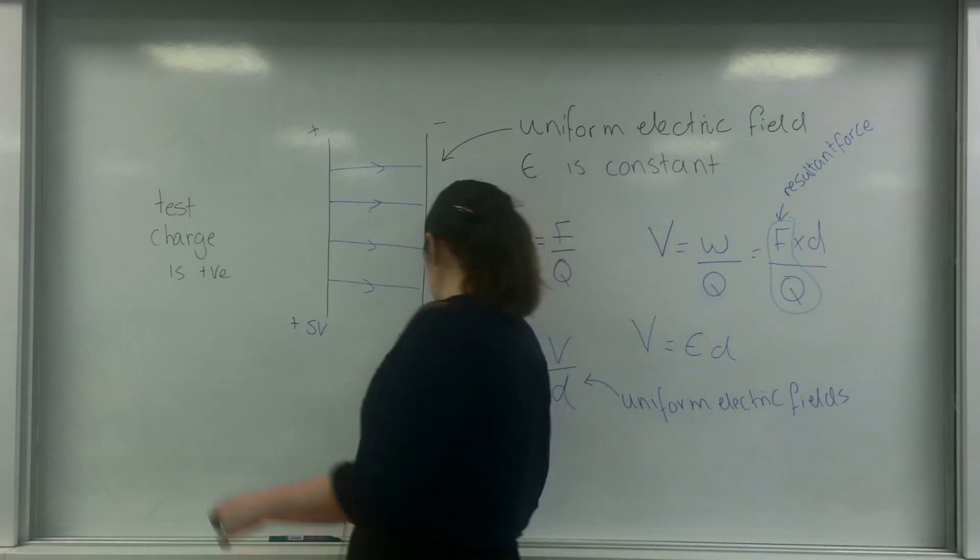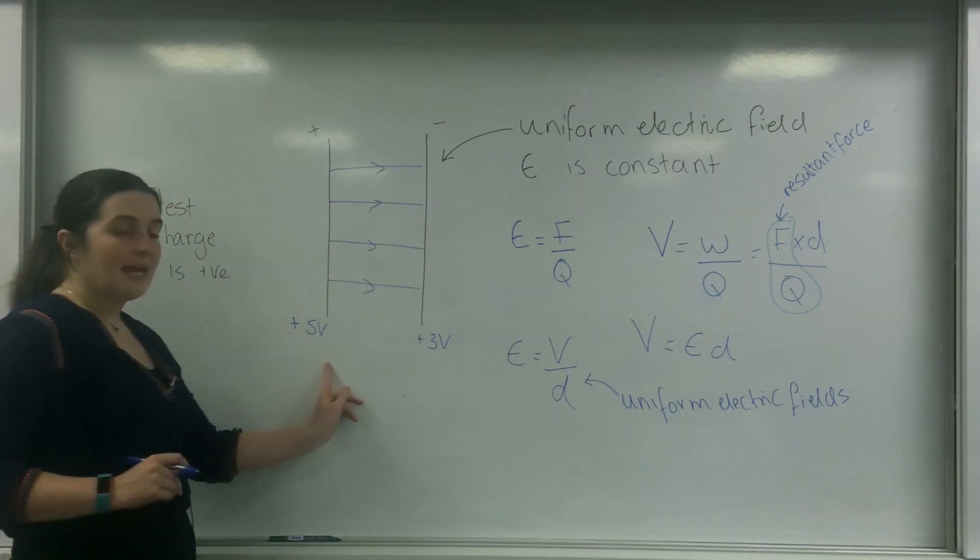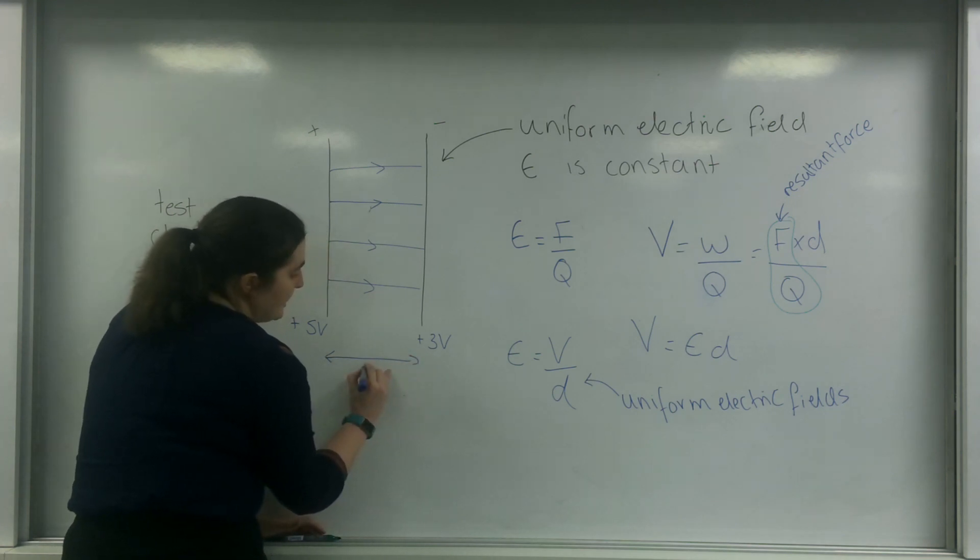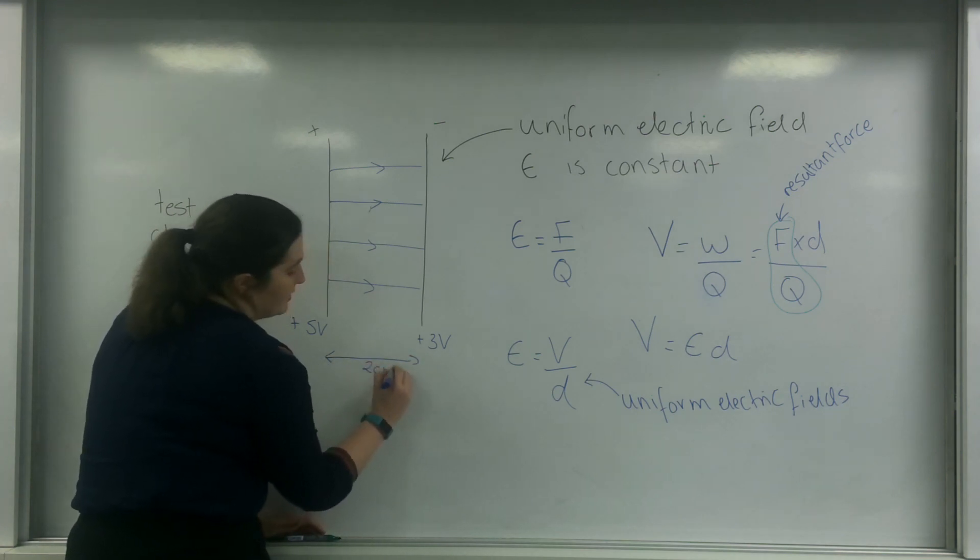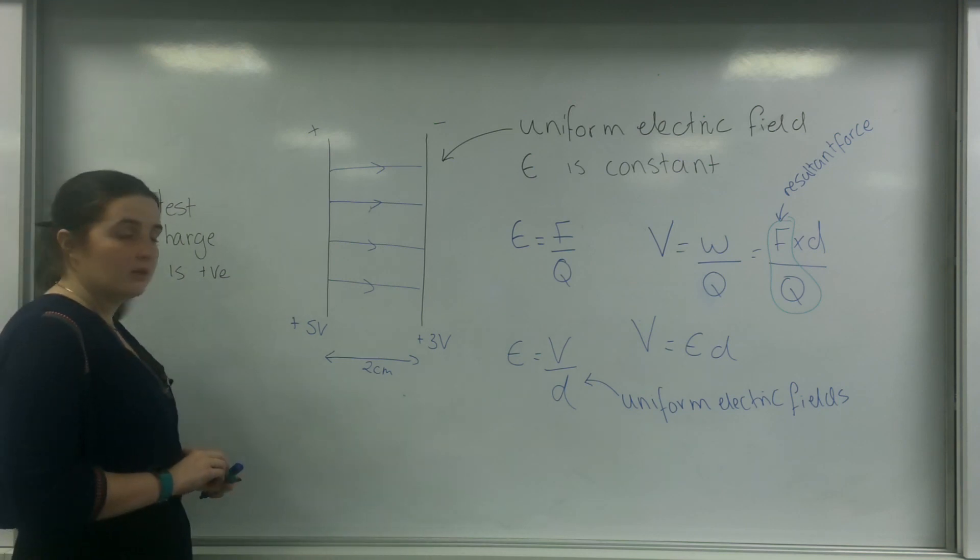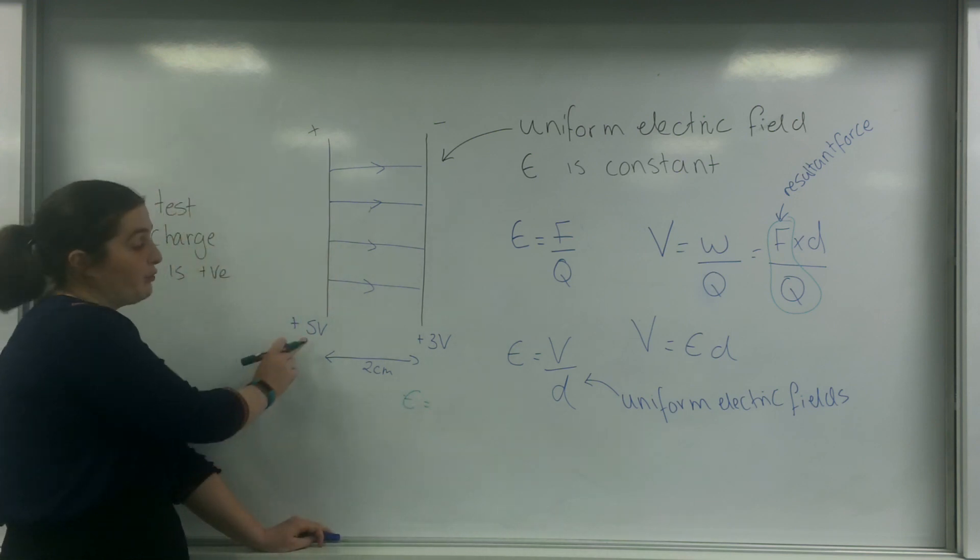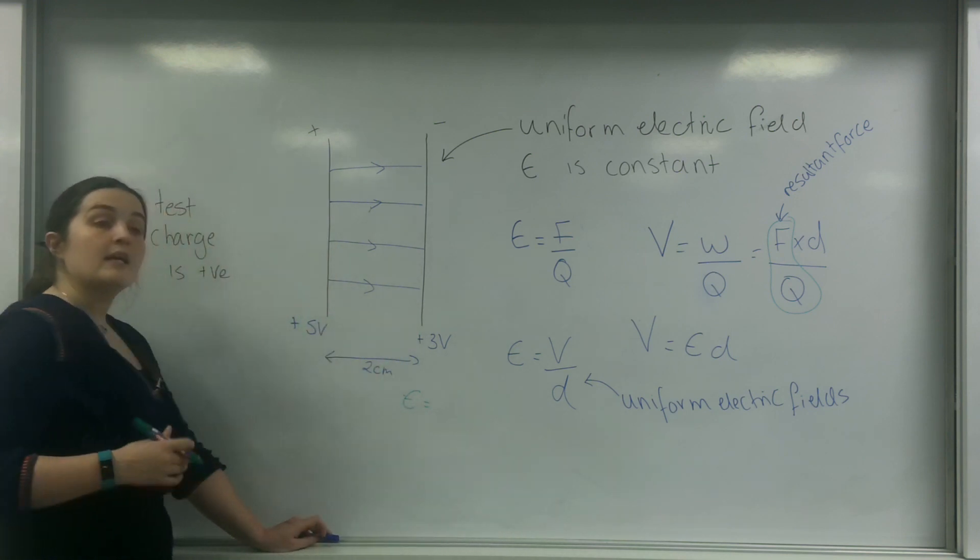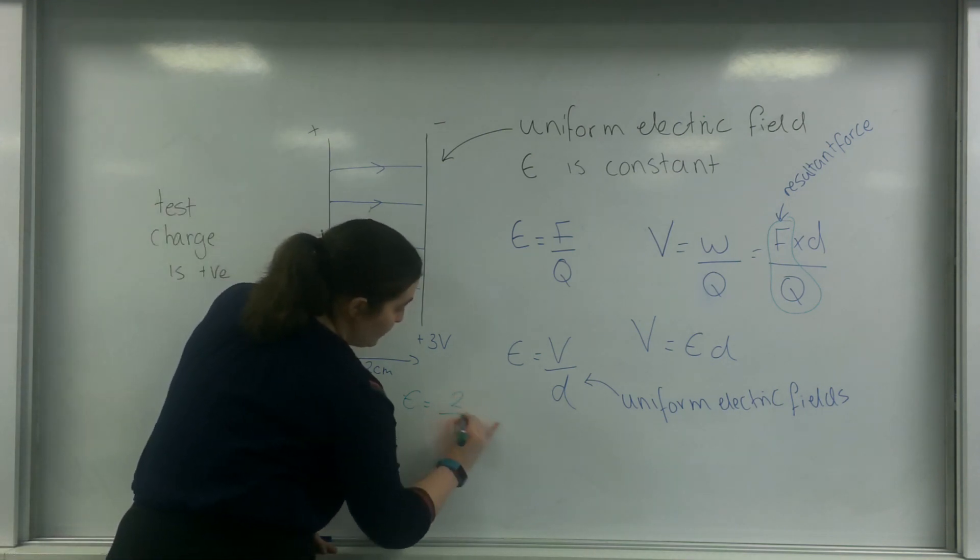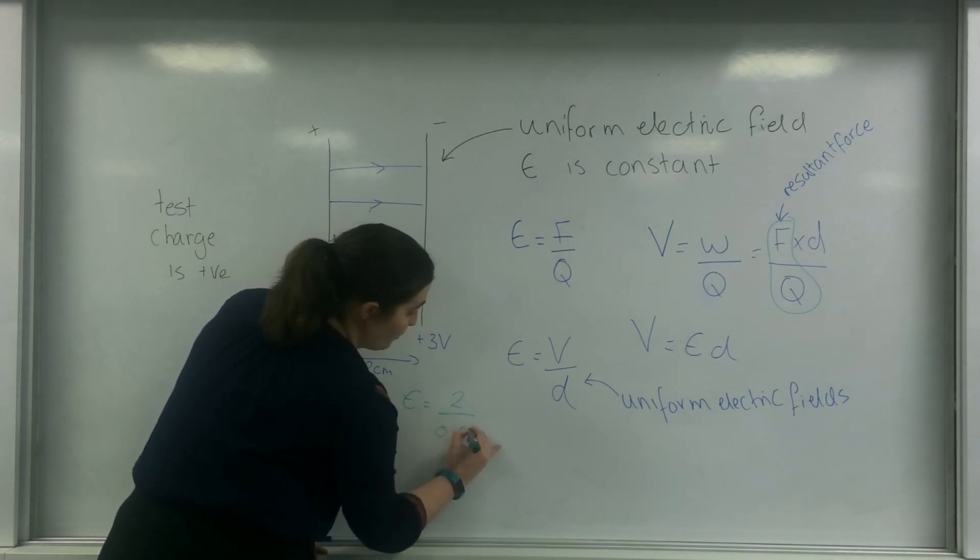And this is actually quite powerful. So my field strength is my potential difference over these fields here. And let's say this is two centimeters. I could work out the field strength in this field. So E equals my potential difference, so I'm going from five to three, so my potential difference is two.